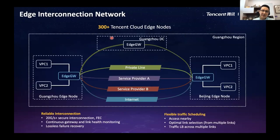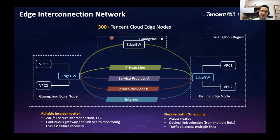In phase one, we use an edge gateway — a distributed software-based gateway deployed in different edge nodes or edge boxes — to support interconnection, encryption, decryption, and IPsec. Traffic can also be scheduled very smartly across different network links. Among these 300 Tencent cloud nodes, not every node has a private link — some are connected using virtual links based on different service providers or the internet. So we need very flexible traffic control and scheduling among at least 300 Tencent cloud edge nodes.